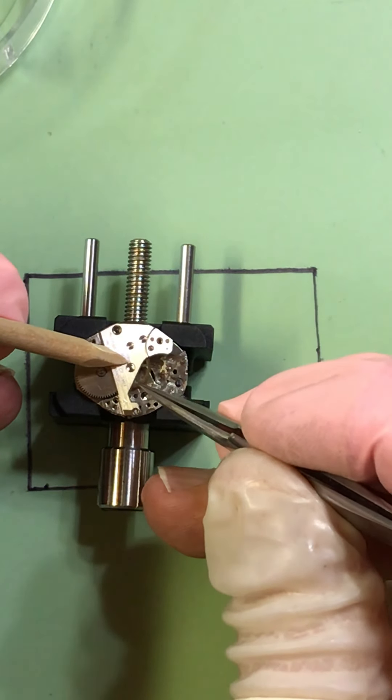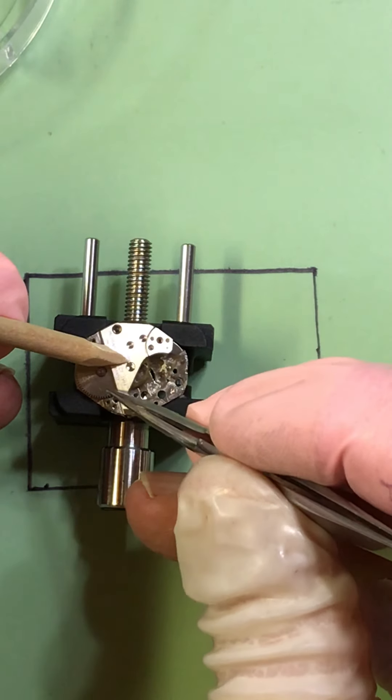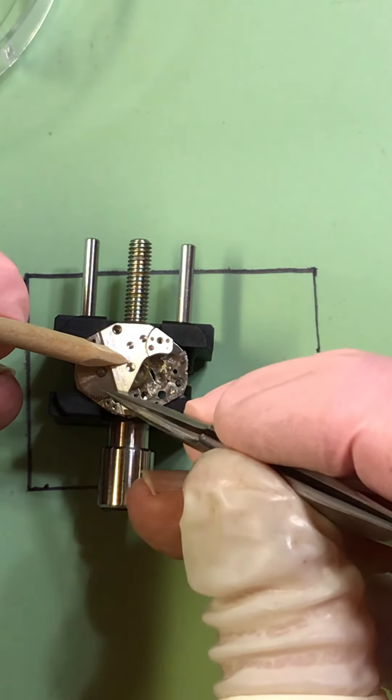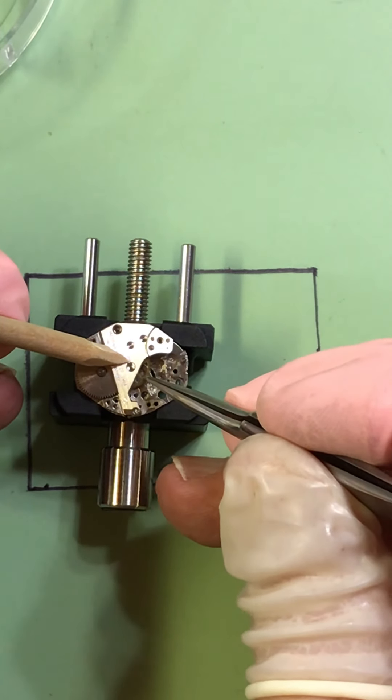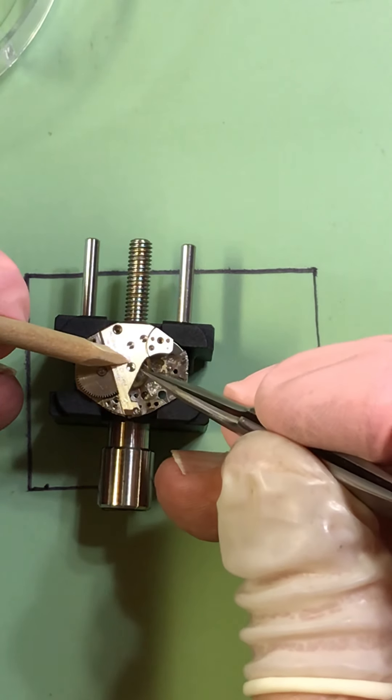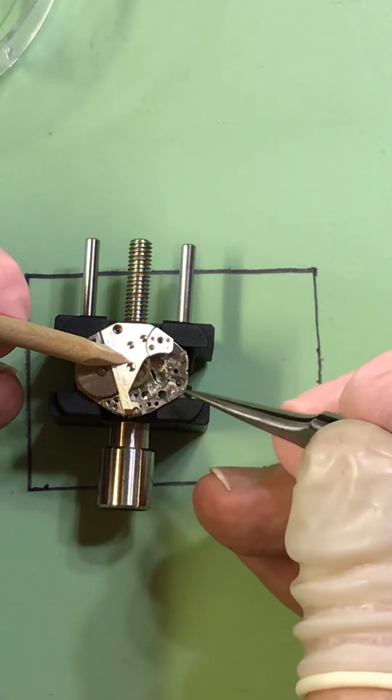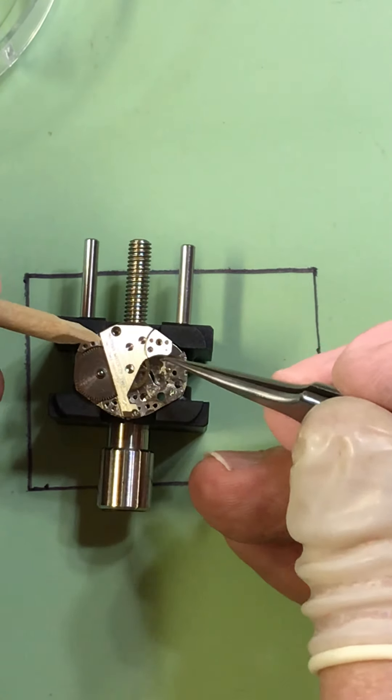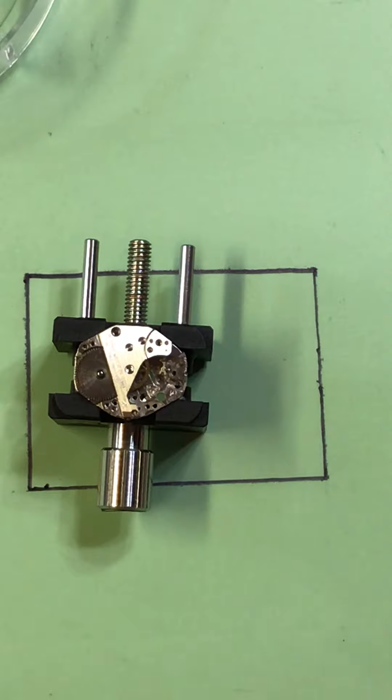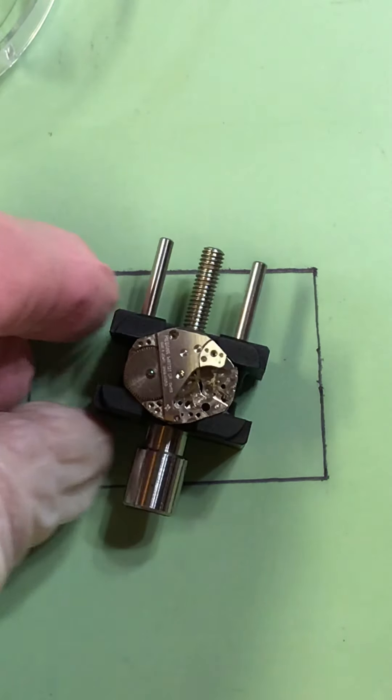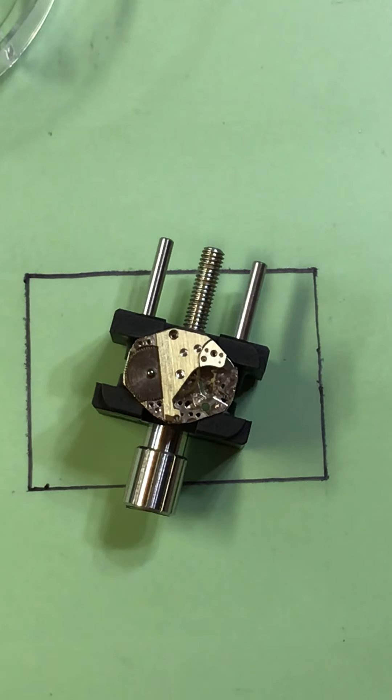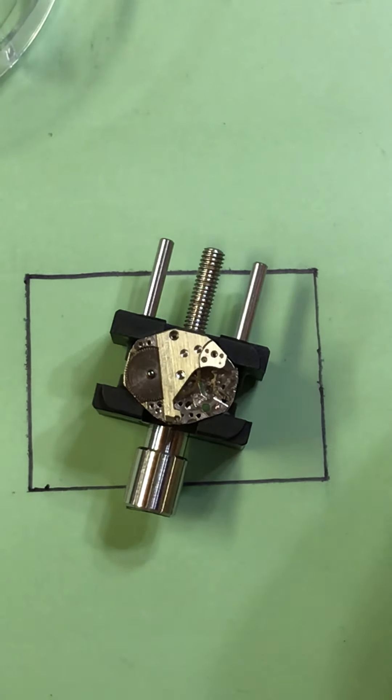You can actually see the main spring turn as well. Once I get it screwed down I will show you the escapement turning. So I was able to get that on - a lot of persistence makes this fun, eventually it goes on.